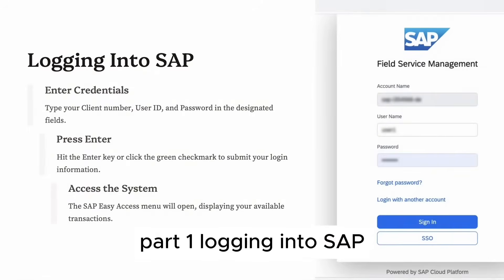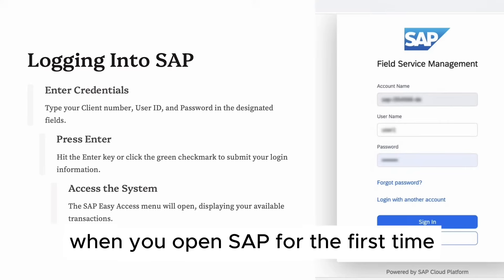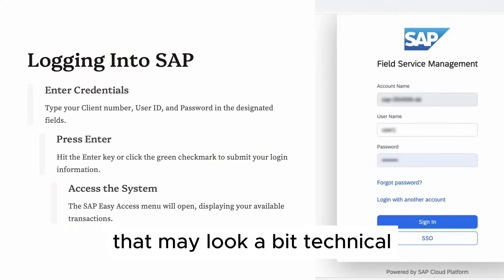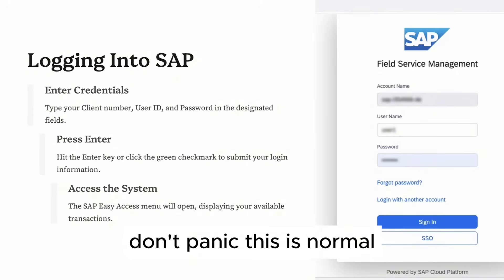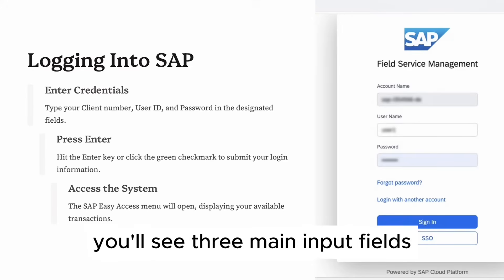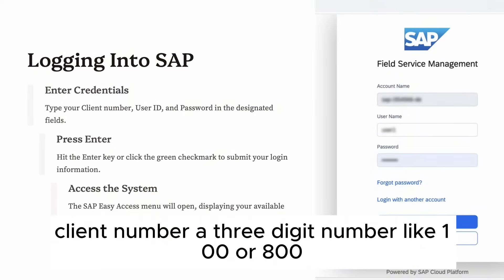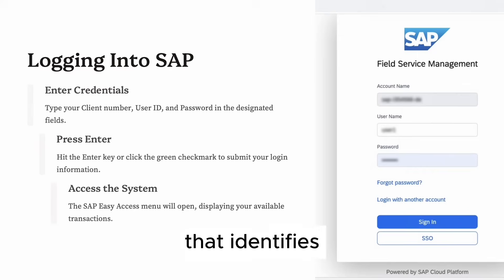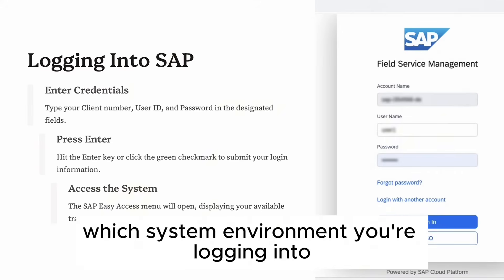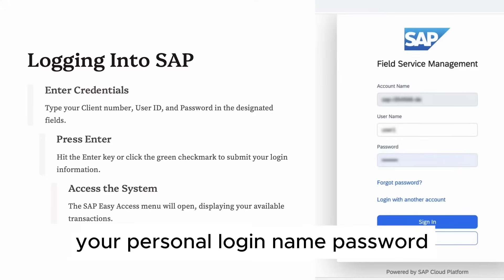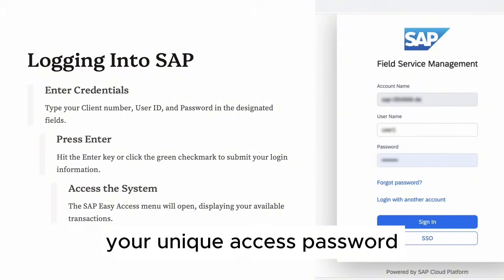Part 1: Logging into SAP. When you open SAP for the first time, you'll be presented with a login screen that may look a bit technical. Don't panic, this is normal. You'll see three main input fields: Client number — a three-digit number like 100 or 800 that identifies which system environment you're logging into (production, test, or training); User ID — your personal login name; and Password — your unique access password.